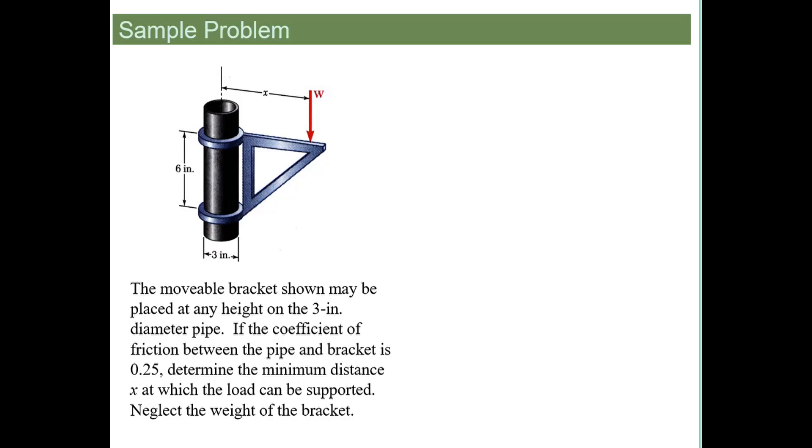This is a good example and segue into axle friction. So we have a bracket that has kind of a sleeve around this three inch diameter pipe. We're given a few dimensions here and the friction coefficient and we want to figure out this distance x that we can put a weight on here that it would not slide down the pipe.